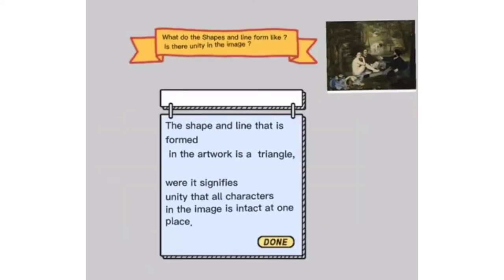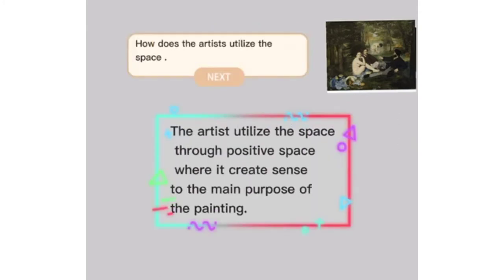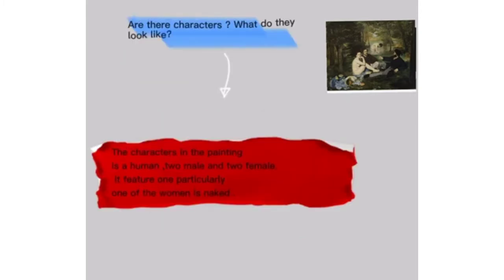What do the shapes and lines form? Is there any unity in the image? The shapes and lines formed in the artwork make a triangle, which signifies unity — all characters in the image are intact in one place. The artist utilizes space through positive space, where it creates meaning for the main purpose of the painting.